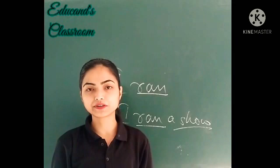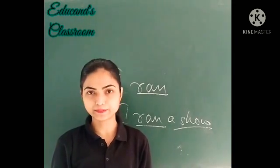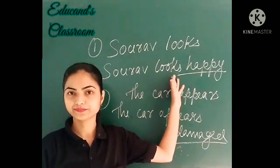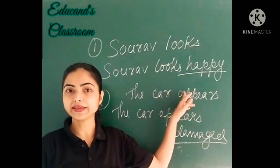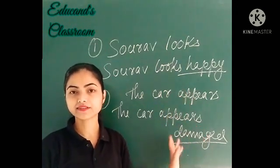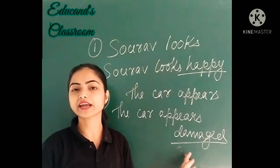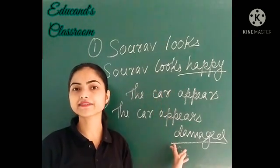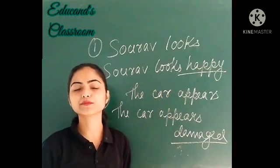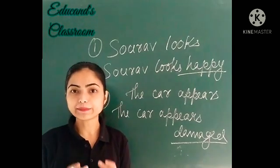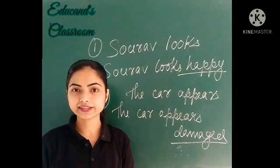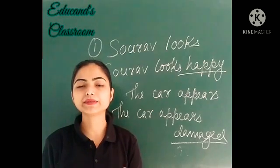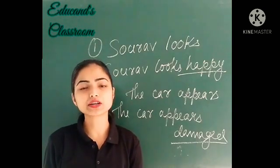Abhi, there are also two other types of verb: complete verb and incomplete verb. Toh yaha peh mein dou example lethi hoon. First example hai: 'Sorab looks.' Second kya hai? 'Sorab looks happy.' Yaha peh, 'The car appears.' Second statement hai: 'The car appears damaged.' Toh difference kya hai dono statement mein? First sentence mein ek word hai 'happy,' and second sentence mein ek word hai 'damaged.' In sab ko hum bol sakta hai compliments.